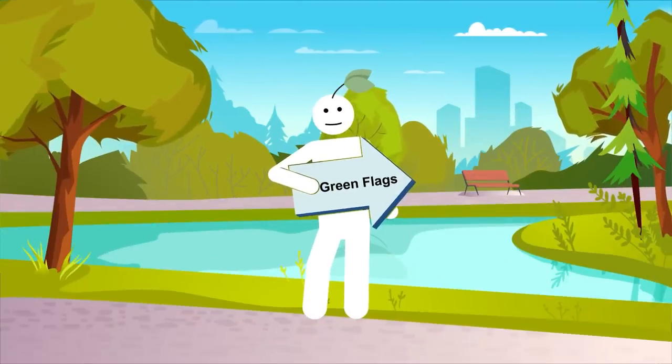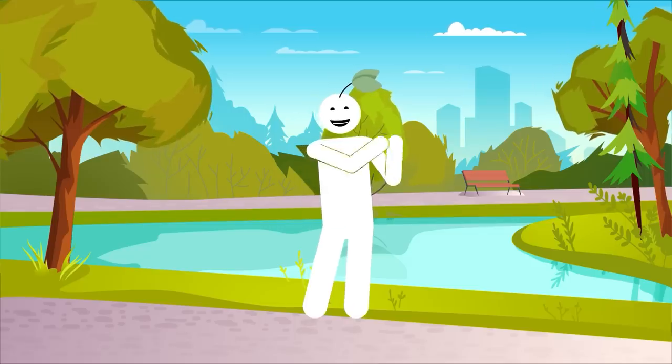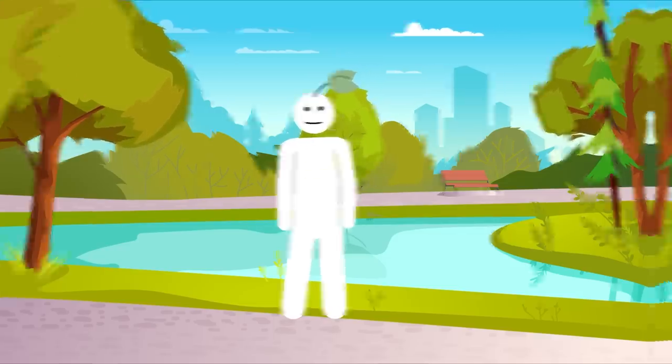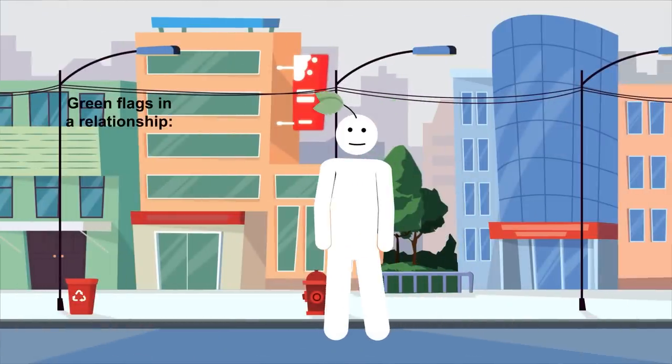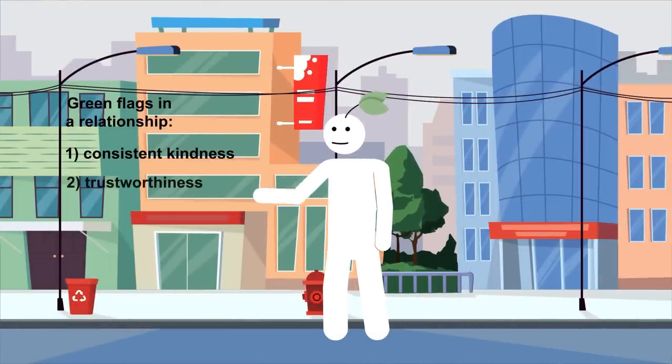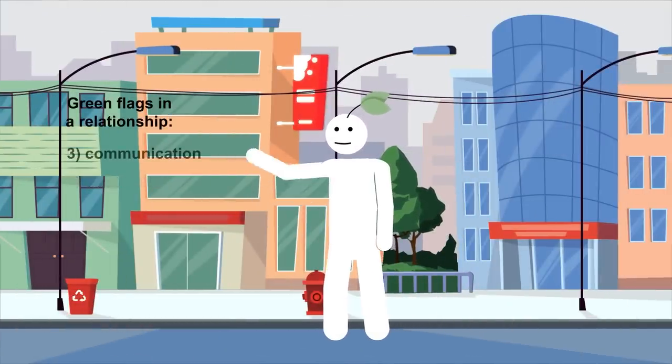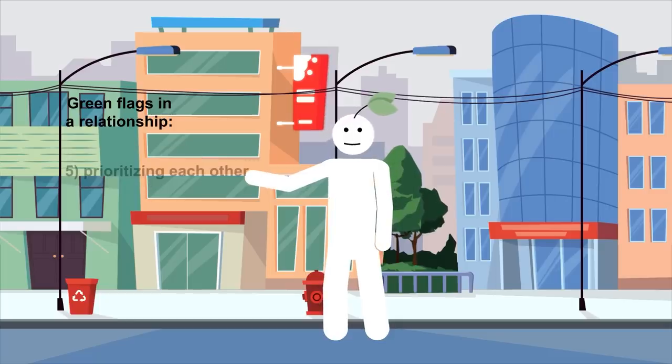Okay, so we've talked about red flags, but what about green flags? Common green flags in a relationship can be consistent kindness, trustworthiness, communication, reliability, and prioritizing each other.